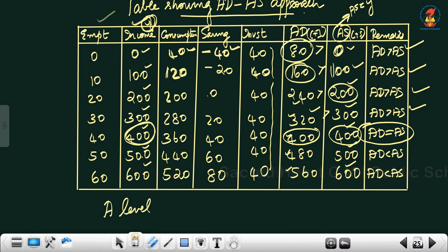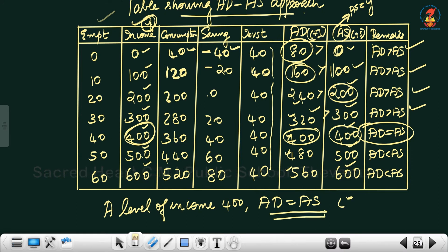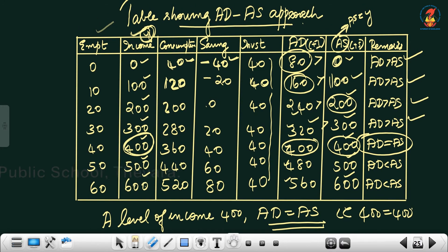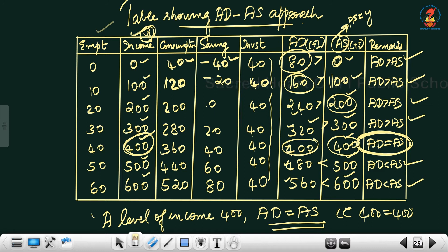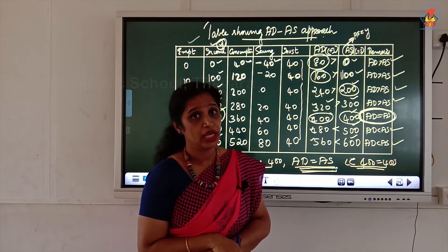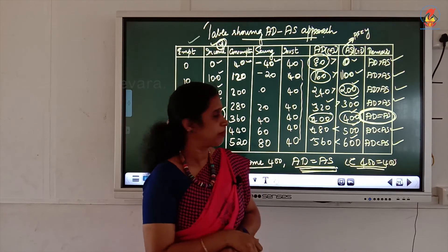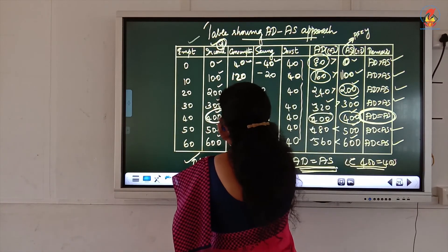The conclusion is: at income level 400, aggregate demand equals aggregate supply — that is, AD equals AS equals 400. After that, at income 500 and 600, aggregate demand becomes less than aggregate supply. Therefore, equilibrium level of income, output, and employment is achieved at income level 400.